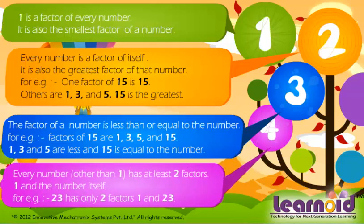Every number other than 1 has at least two factors: 1 and the number itself. For example, 23 has only two factors: 1 and 23.